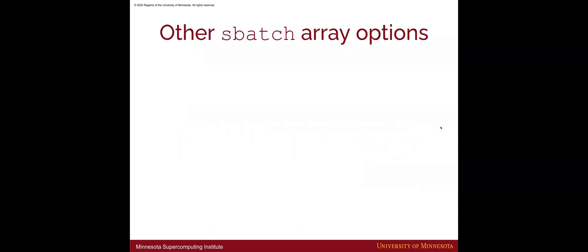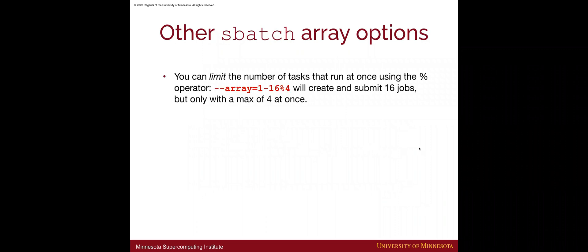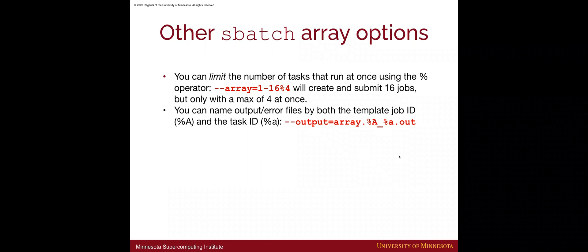There are some other sbatch options worth mentioning. You can limit the number of tasks that run at once — for instance if they are all very memory intensive — by using the percent operator. For example, 'array=1-16%4' will create and submit 16 jobs but only run four of them at once. You can also name your output and error files using the output and error flags with percent A for the job ID or percent a for the task ID, creating a separate output file for each task.